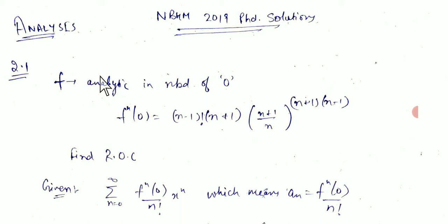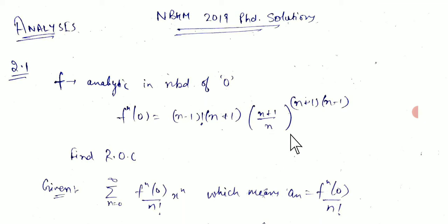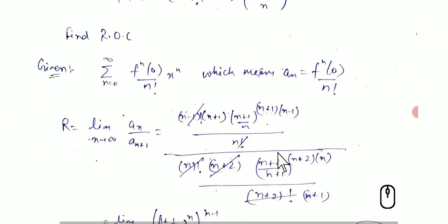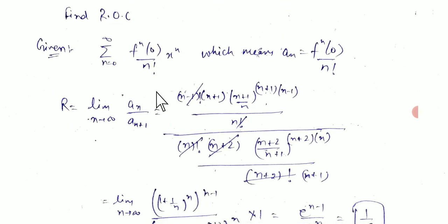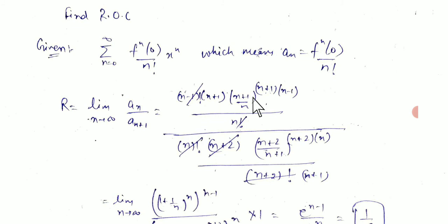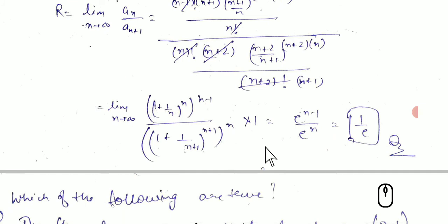Our first question: let f be an analytic function in the neighborhood of 0. We are given that f^(n)(0) equals (n−1)! · (n−1) · ((n+1)/n)^(n+1) · (n−1). We have to find the radius of convergence. Using the Taylor series, a_n = f^(n)(0)/n!. Applying the radius of convergence formula, the radius of convergence is 1/e.